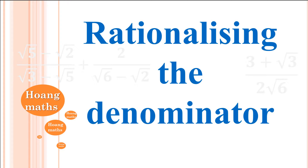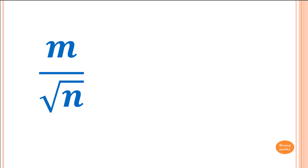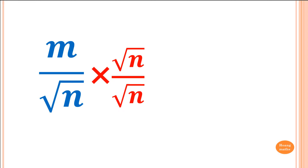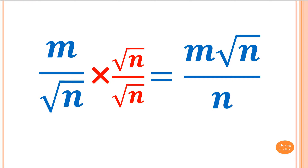Rationalizing the denominator means we want to get rid of the surds on the denominator. So let's say m over square root of n. The idea is to get rid of the surd down the bottom, so we must multiply by square root of n on the bottom, and we need to multiply the numerator by square root of n as well. Square root of n times square root of n gives us n — that's the whole idea. So if I multiply by root n on top and bottom, the answer is the top is m root n and the bottom becomes n. That's the result.